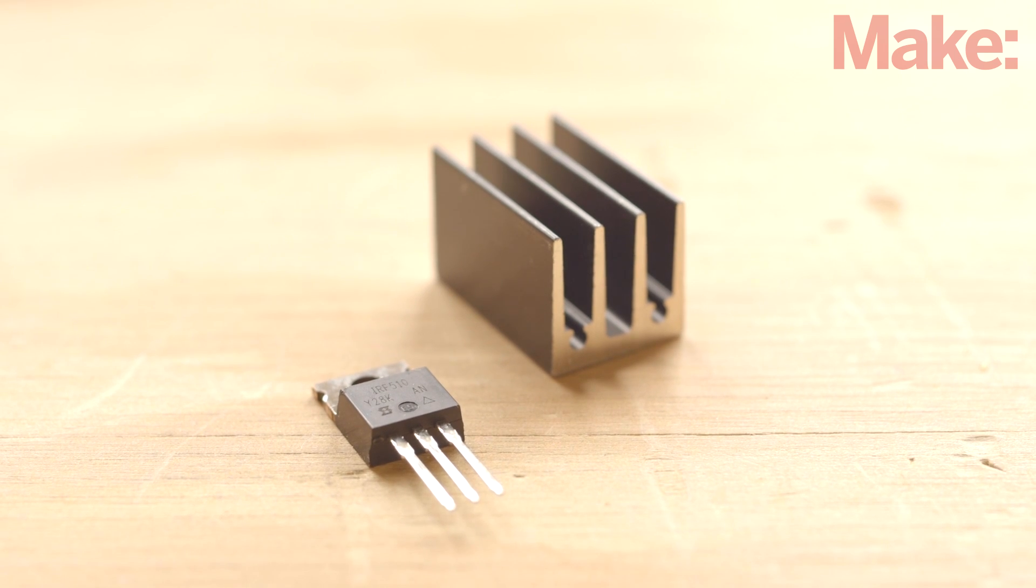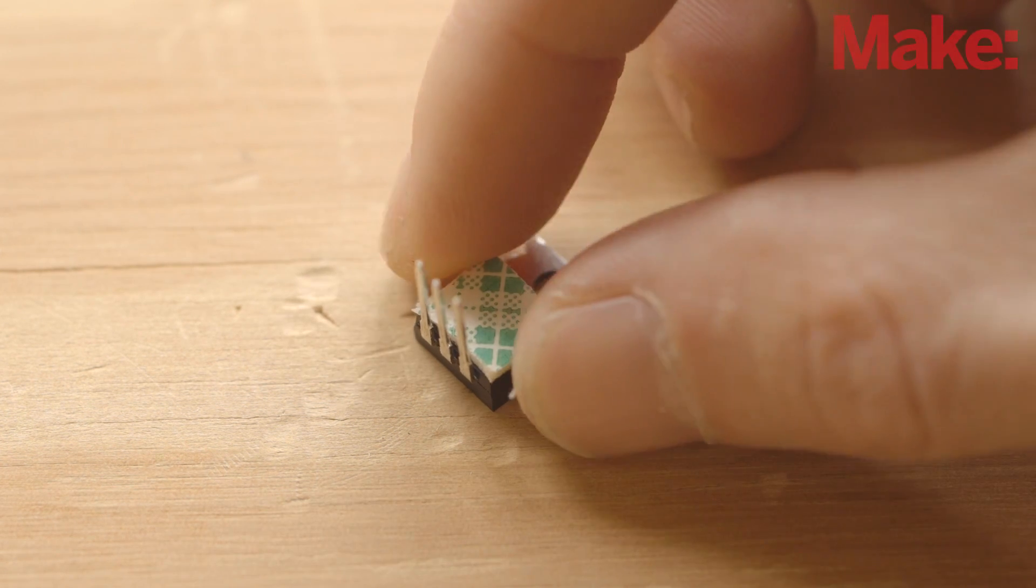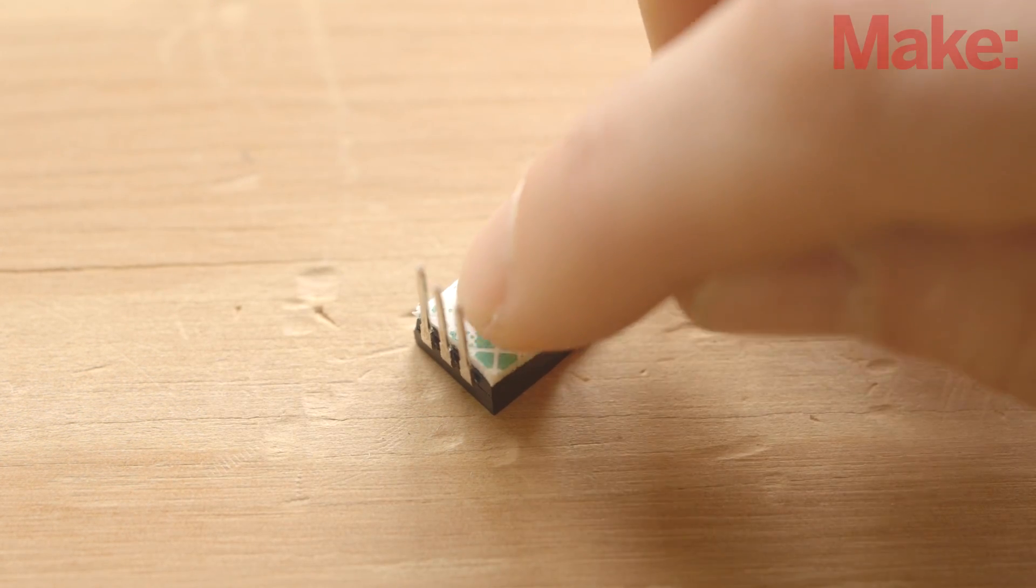The transistor that switches the motor current may get a bit hot when running, so we'll attach a heat sink to keep it cool. First, bend the three MOSFET legs up toward the transistor. Cut a piece of double-stick foam tape to fit the front surface of the body and stick it in place.